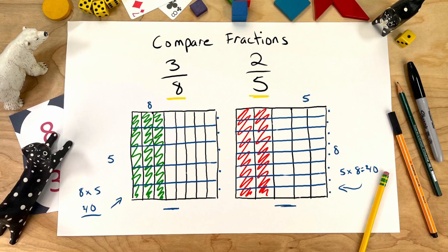Now, we have the same number of spaces, same area for each one of the pieces. Now, we can make a comparison.